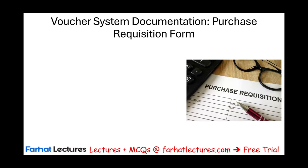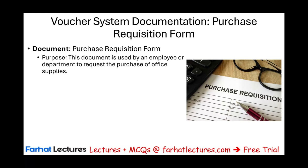In the voucher system, there are certain documents you need to be familiar with. We're going to work an example where someone in the marketing department — let's call them Tom — needs to buy supplies, specifically pens. What would they do? They start by filling out a purchase requisition form to get approval to buy the supplies.